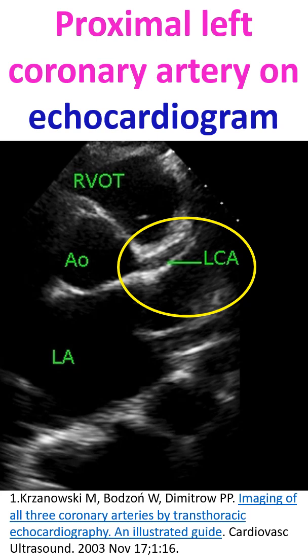Coronary arteries are relatively easier to image in children, while in adults the echo window is often not good enough for imaging coronary arteries by echocardiography. In some patients with renal failure, the images are good enough so that the left anterior descending coronary artery can be imaged to a long extent. Probably the waterlogged thorax permits better transmission of ultrasound in these cases.